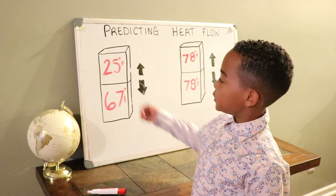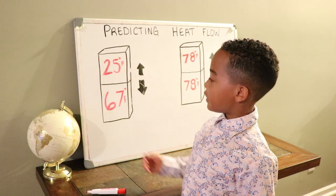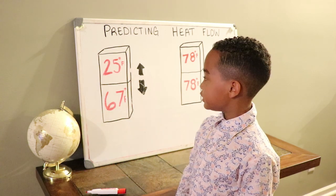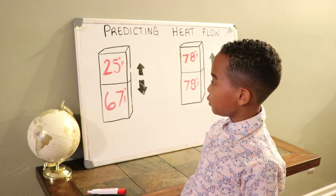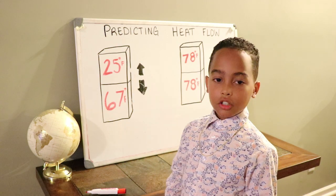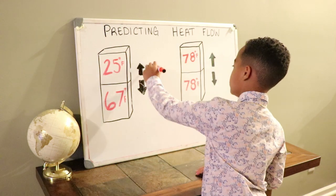You see we have this example, 25 degrees Fahrenheit with 67 degrees Fahrenheit. Which way do you think the heat will flow? You remember we said the heat would flow to the colder one. So the heat would flow this way.